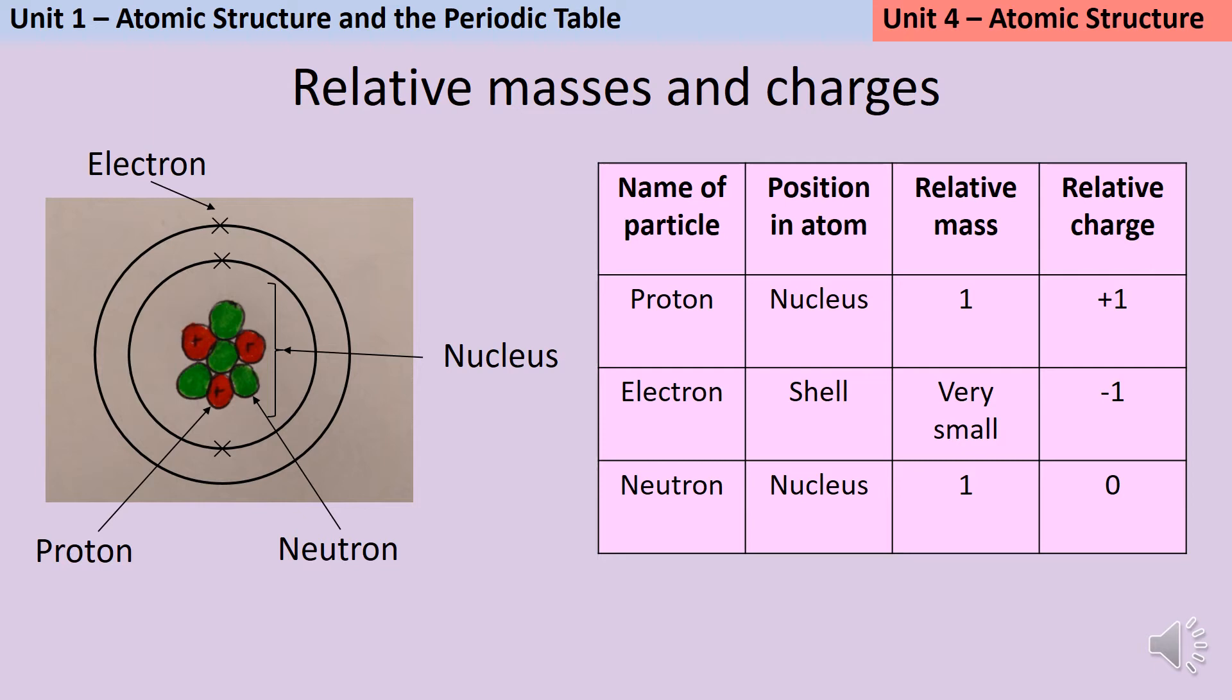You should know about the relative masses and charges of these particles. Protons have a positive charge of plus one, electrons have a negative charge of minus one, and neutrons have no charge. In terms of mass, the proton and neutron weigh about the same, and the mass of an electron is about two thousand times smaller, but for GCSE it's enough to just say that it's very small.